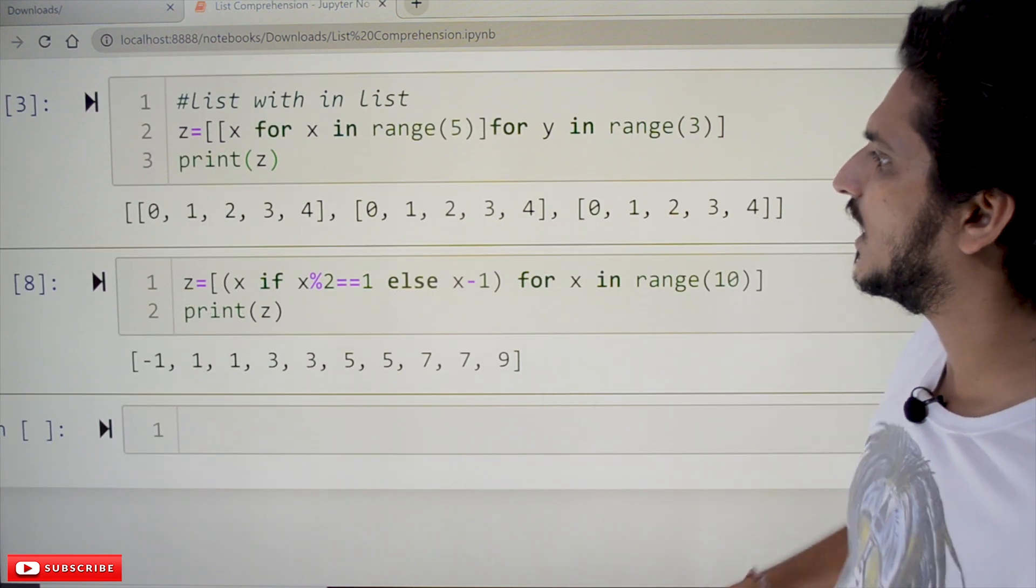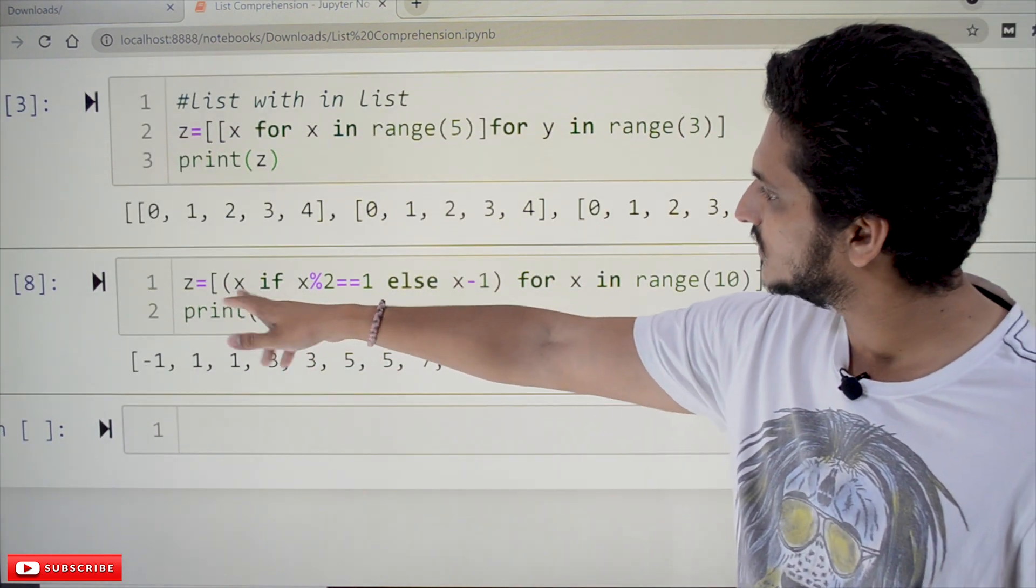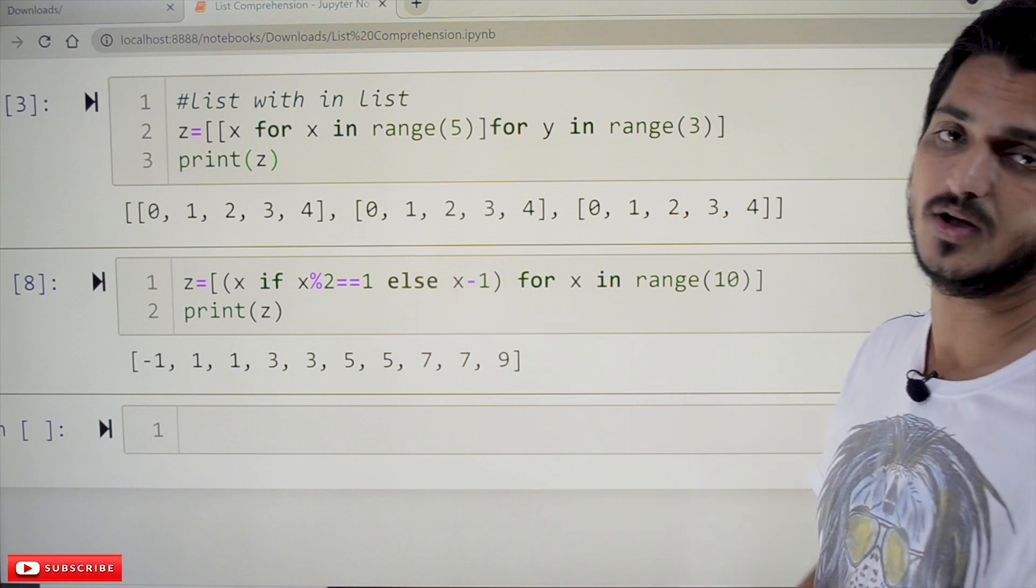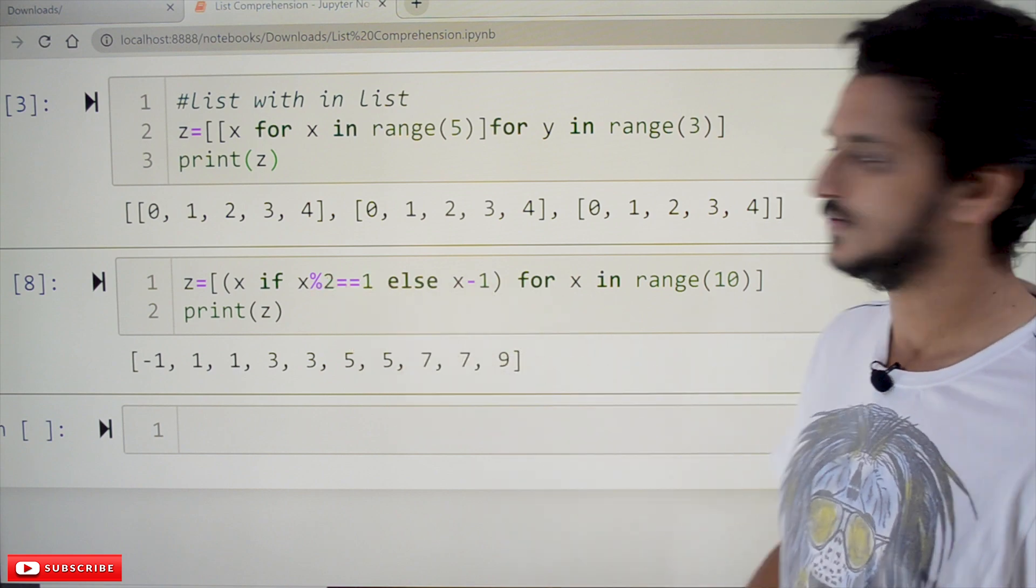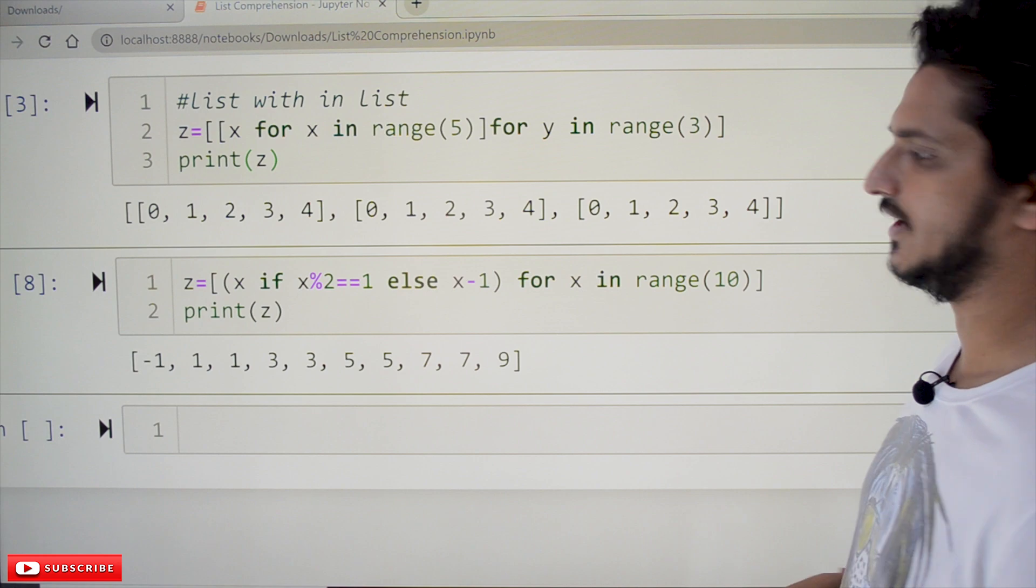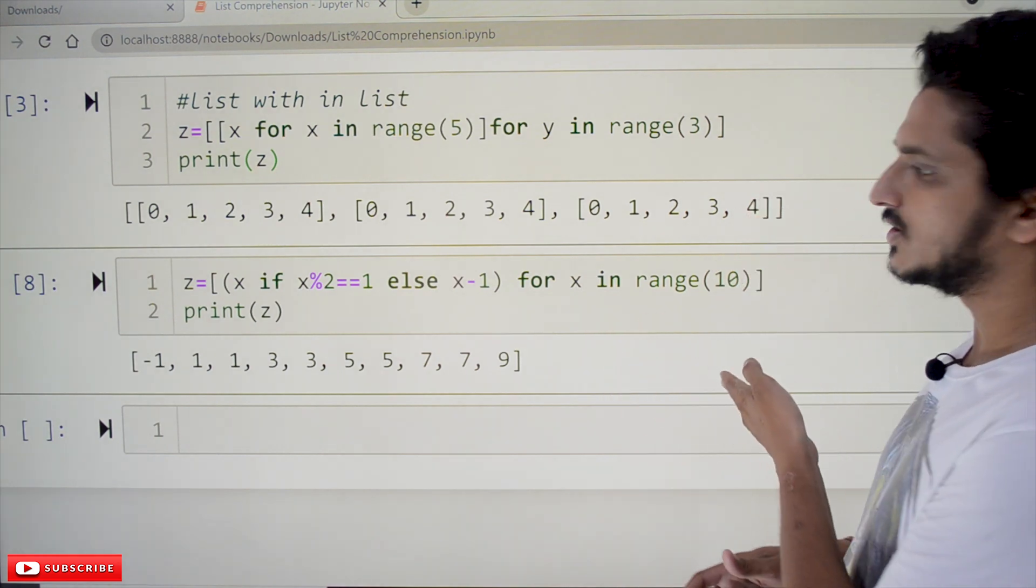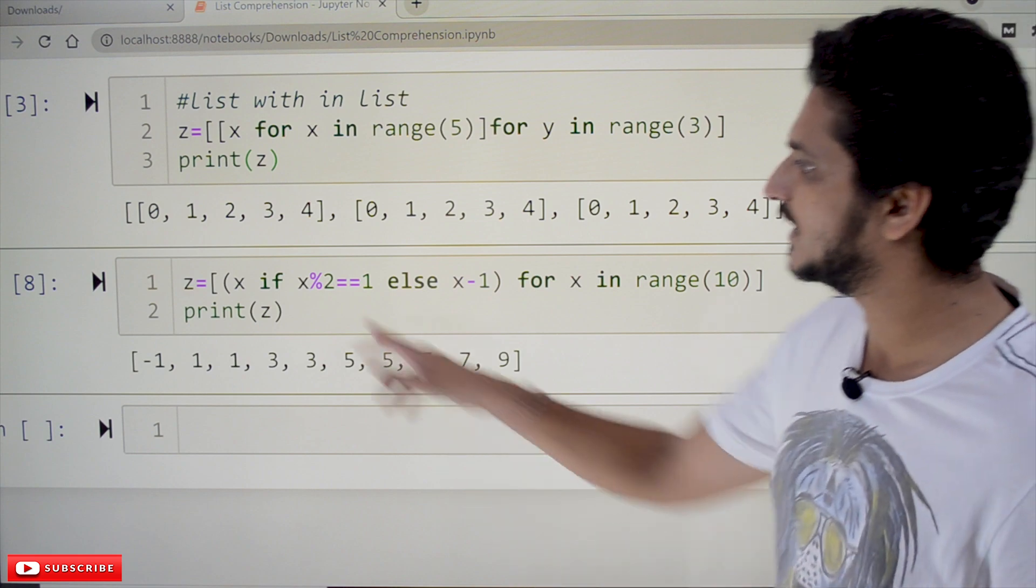Coming to the next one: z. If x mod 2 == 1 else x-1. We can write the else part here also. For x in range(10), it is taking values from 0, 1, 2, 3, so on up to 9. So, what's the values it is displaying? If x mod 2, it is an odd number. If it is an odd number,